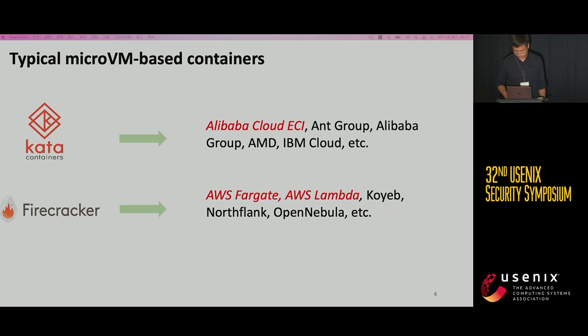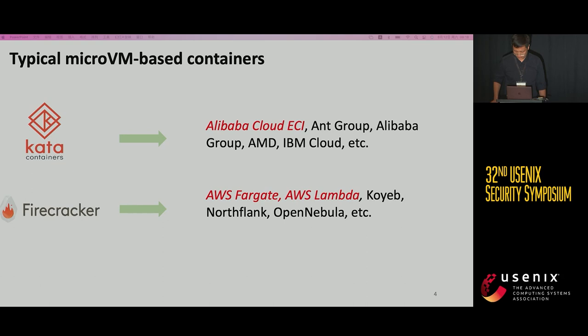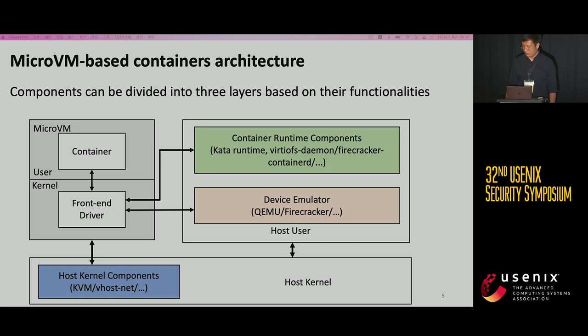Cloud vendors such as Amazon AWS and Alibaba Cloud use Micro-VM-Based Containers to isolate different workloads from multi-tenants. More specifically, Alibaba Cloud ECI uses the Kata container and Amazon AWS uses the Firecracker-based container in its Fargate service. The components of Micro-VM-Based Containers can be divided into three layers: Container Runtime Components, Device Emulator, and Host Kernel Components. The Container Runtime Components create and manage the containers; the Device Emulator is a host user-space program that simulates hardware; and the Host Kernel Components are loadable host kernel modules providing virtualization support.